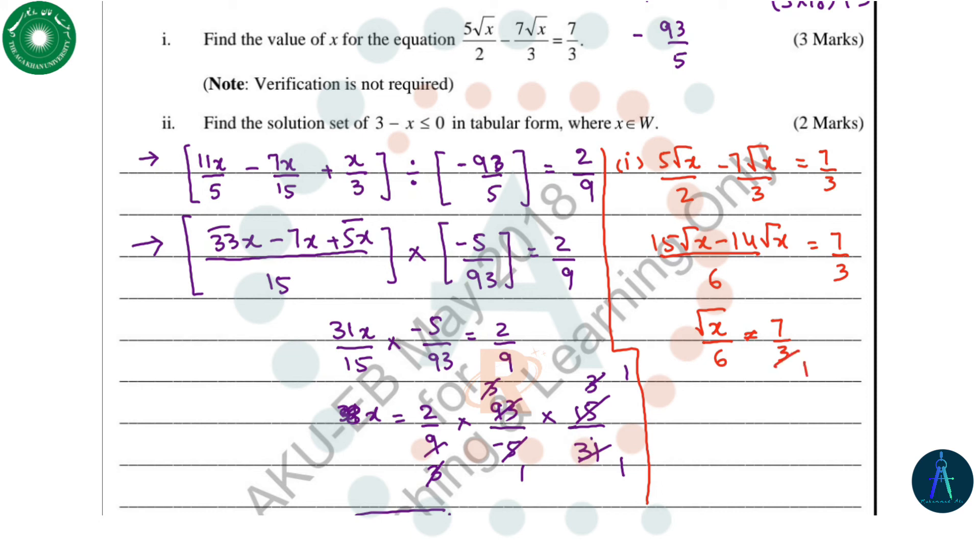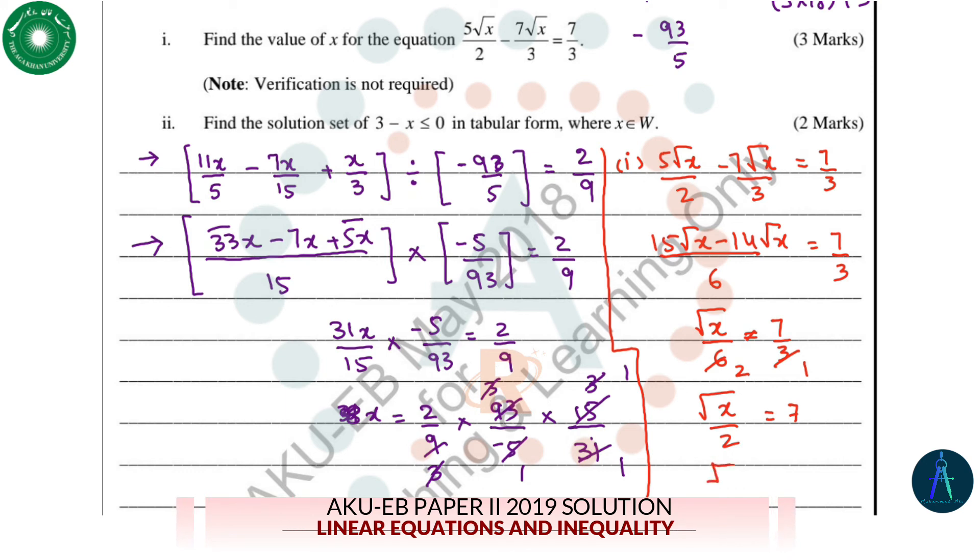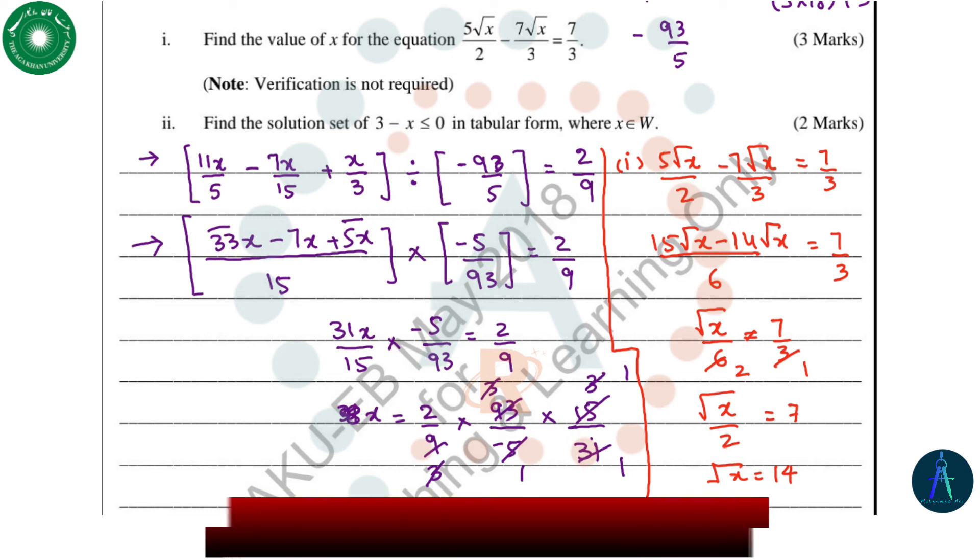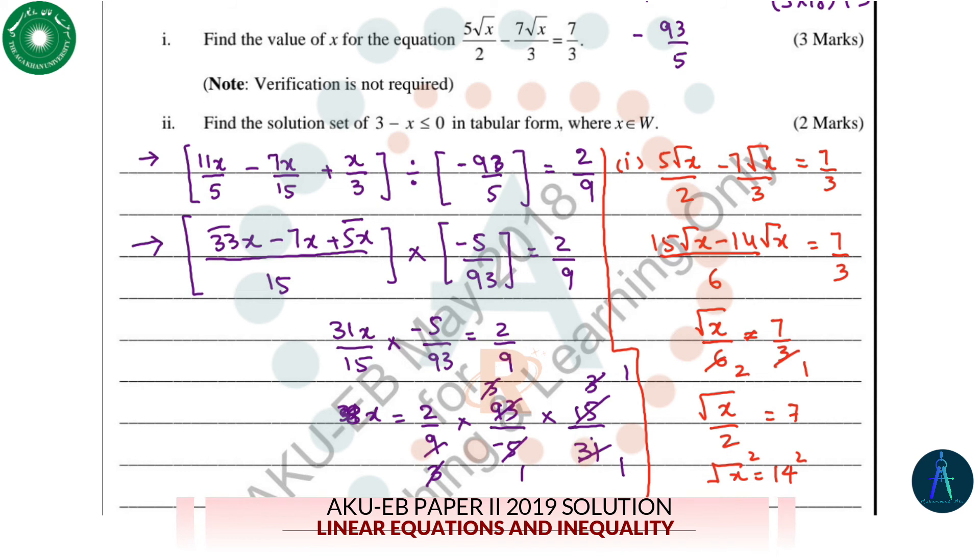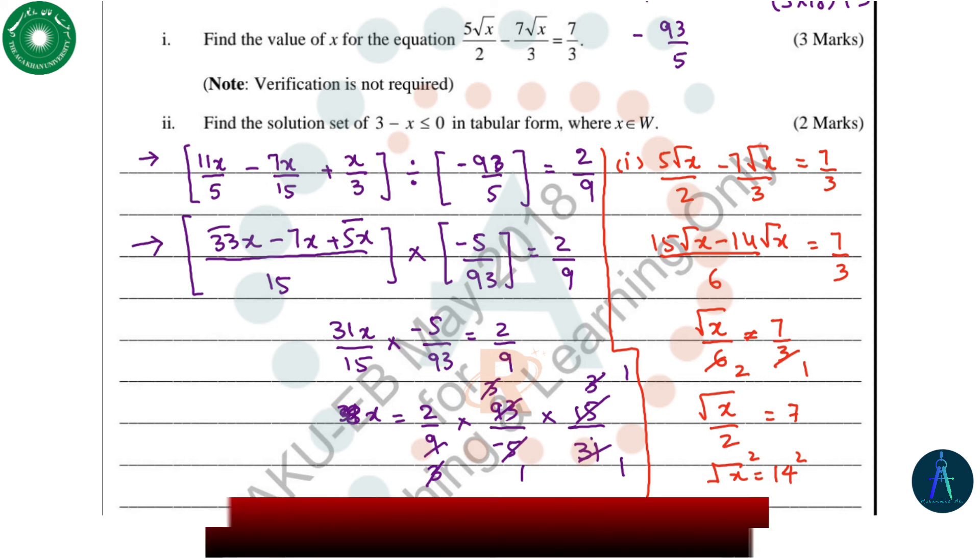This 3 and 6 simplifies to 2, so the equation becomes square root x over 2 equals 7. So square root x will equal 14. And finally, we apply square on both sides, so we get the value of x. x equals 14 squared, so this is the correct answer, which equals 196. This is the answer of the first part of this question.